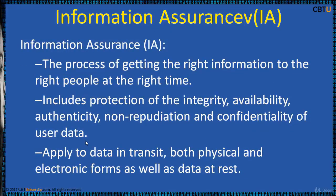Information Assurance is the process of getting the right information to the right people at the right time. It includes protection of Integrity, Availability, Authenticity, Non-Repudiation, and Confidentiality of user data. It uses physical, technical, and administrative controls, and these protections apply to data in transit and data at rest, in both physical and electronic forms.